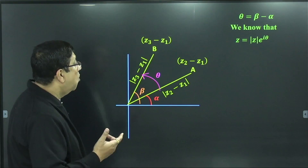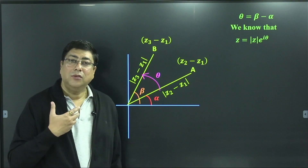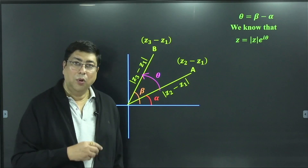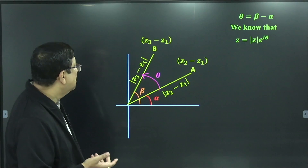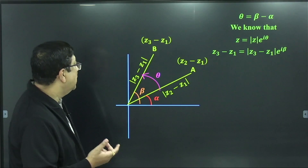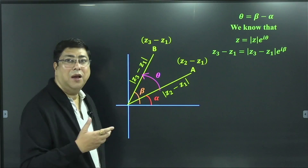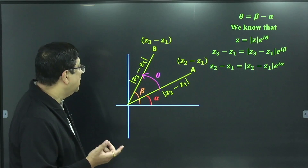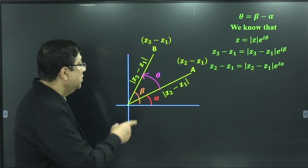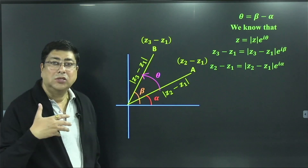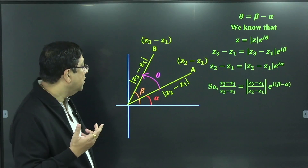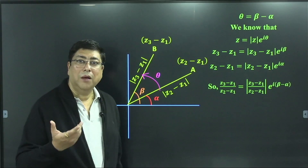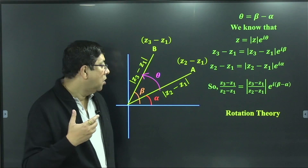We know that any complex number Z can be represented as R·e^(i·theta) in polar form. So here, Z3 minus Z1 equals its modulus times e^(i·beta), and similarly Z2 minus Z1 equals its modulus times e^(i·alpha). Dividing them, we get: (Z3 minus Z1)/(Z2 minus Z1) equals their modulus ratio times e^(i·(beta minus alpha)). This result is popularly known as the rotation theory.